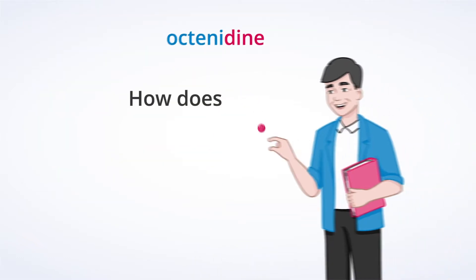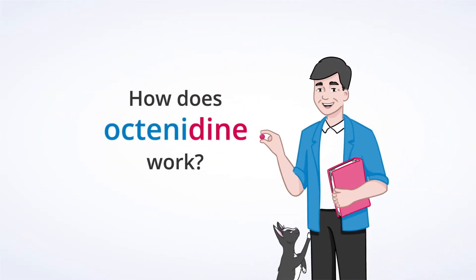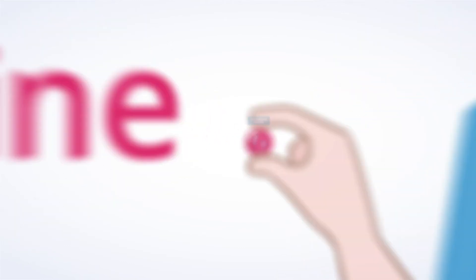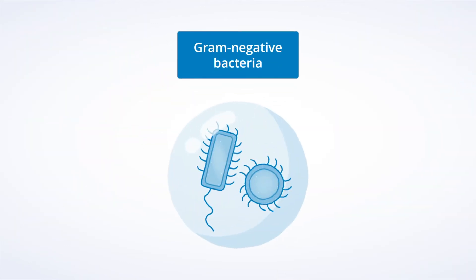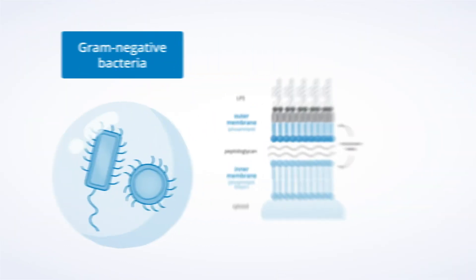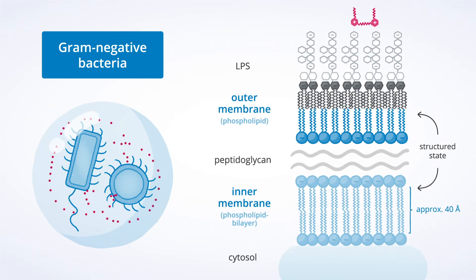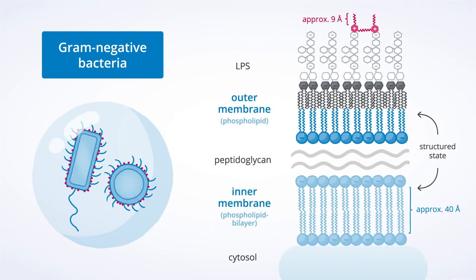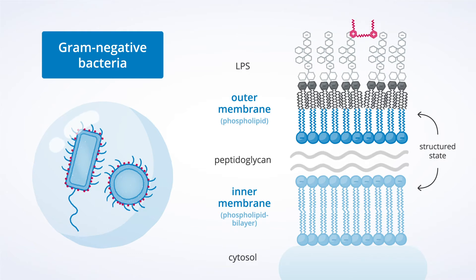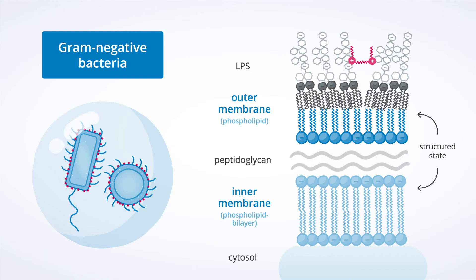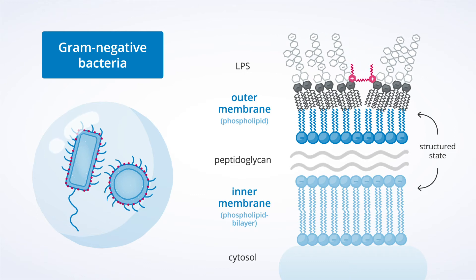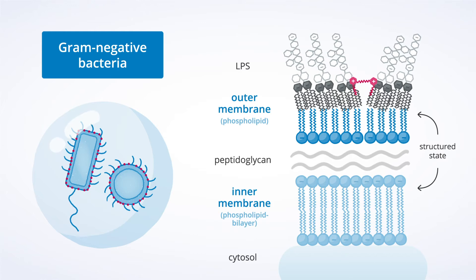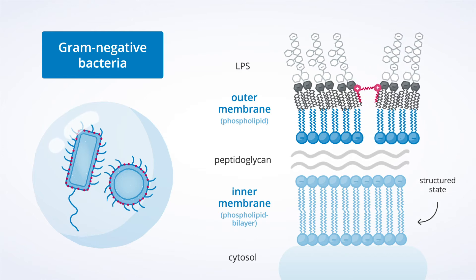But how exactly does Octenidin work? Let's look at its mode of action based on the example of a gram-negative bacterium. Because of electrostatic interactions, the molecule immediately attaches to the outer membrane of the bacterium. Due to hydrophobic interactions, hydrocarbon chains from Octenidin promptly rush between the bacterial lipids and break up the structure of the outer membrane.